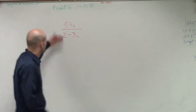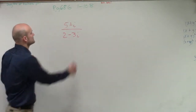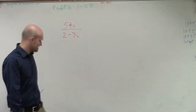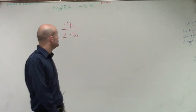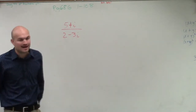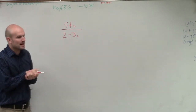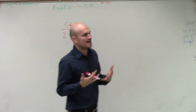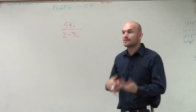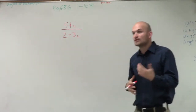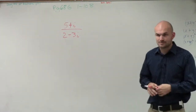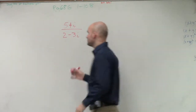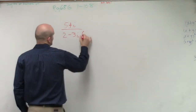What I'd like to do here is show you how to simplify the division of 5 plus i divided by 2 minus 3i. For this problem, remember we do not want to have imaginary numbers in our denominator of our rational expression. So what we talked about to eliminate this is to multiply by what we call the conjugate.